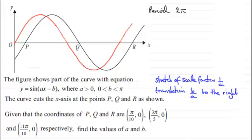Now we're told that the coordinate of P here is pi upon 10, 0. So this point here has coordinates pi upon 10, 0. Whereas at R, this point we're told is 11 tenths pi. So we'll just say that's 11 tenths pi.